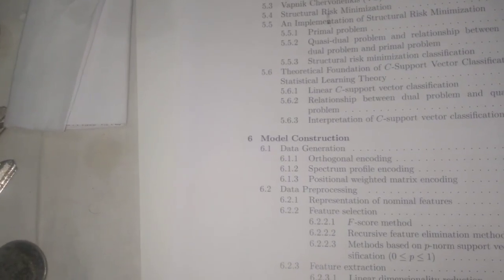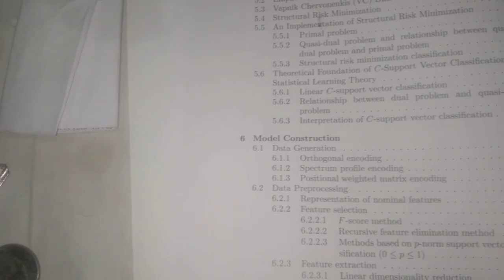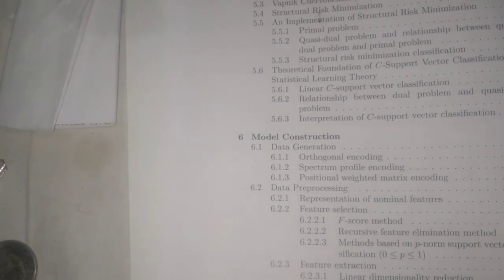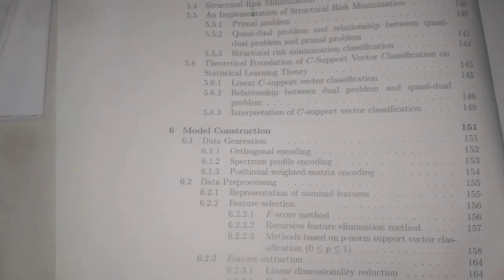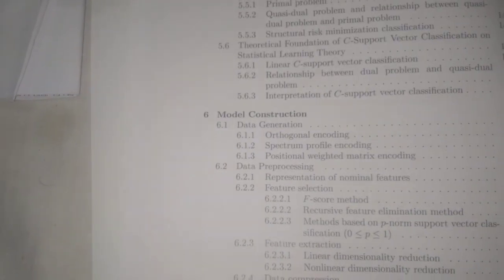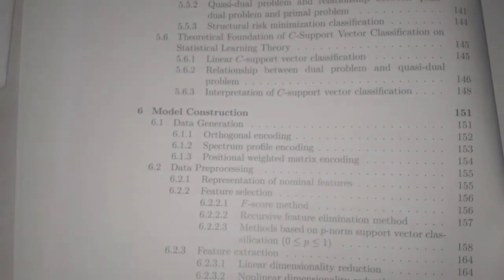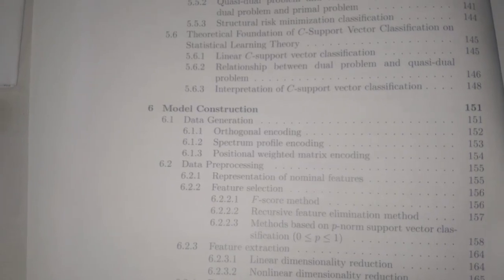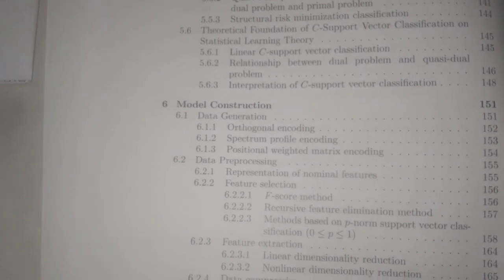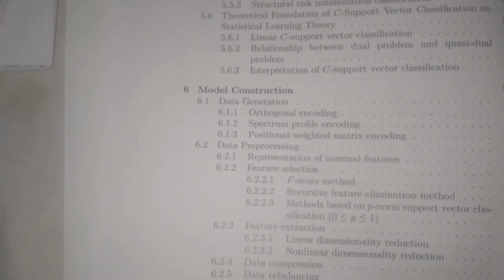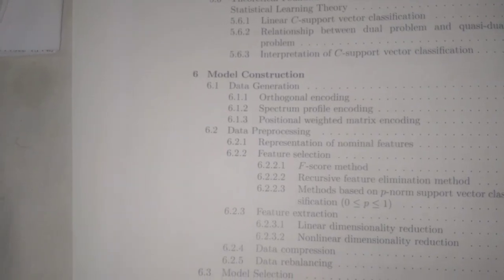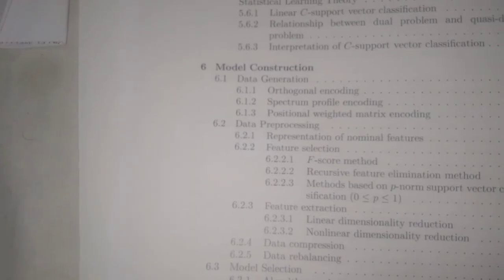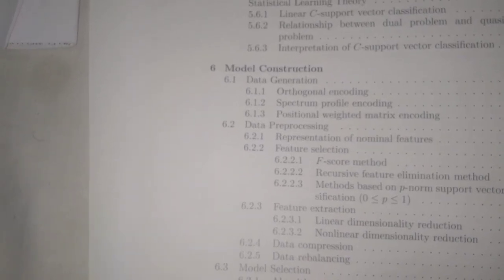The chapter also covers the KKT dual problem and its relationship to the primal problem, structural risk minimization, the theoretical foundation of C-support vector classification, linear C-support vector classification, the relationship between the dual problem and the KKT problem, and the interpretation of C-support vector classification.